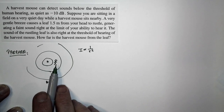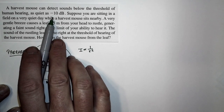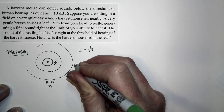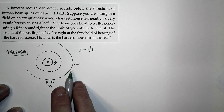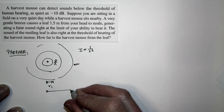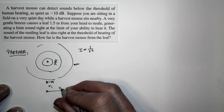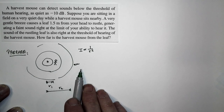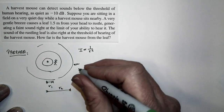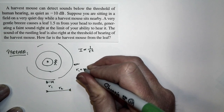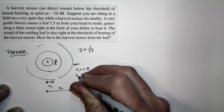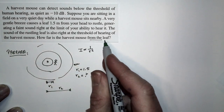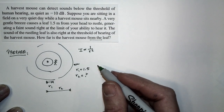It's right at the edge of your ability to be able to hear it. But the harvest mouse has hearing that's more sensitive than yours, so the harvest mouse can hear it at a greater distance. The harvest mouse can hear this at a distance R2, which is greater than R1, because it can detect the sound at a smaller intensity. We know your distance at which you hear it is 1.5 meters. The distance the harvest mouse can hear it at — how far from the leaf — is what we're looking to figure out.